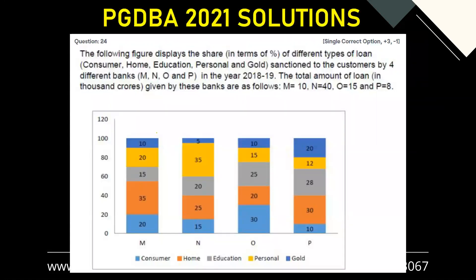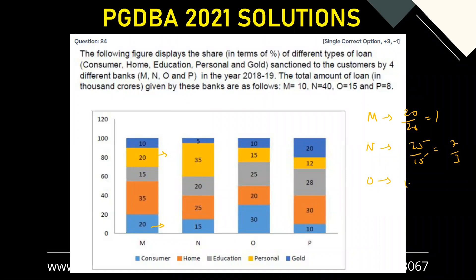The personal loan percentage is this column and the consumer loan percentage is this one. In case of M, we have the ratio 20 by 20, that is 1. In case of N, we have the ratio 35 by 15, which comes out to be 7 by 3. In case of O, we have the ratio 15 by 30, which comes out to be 1 by 2.